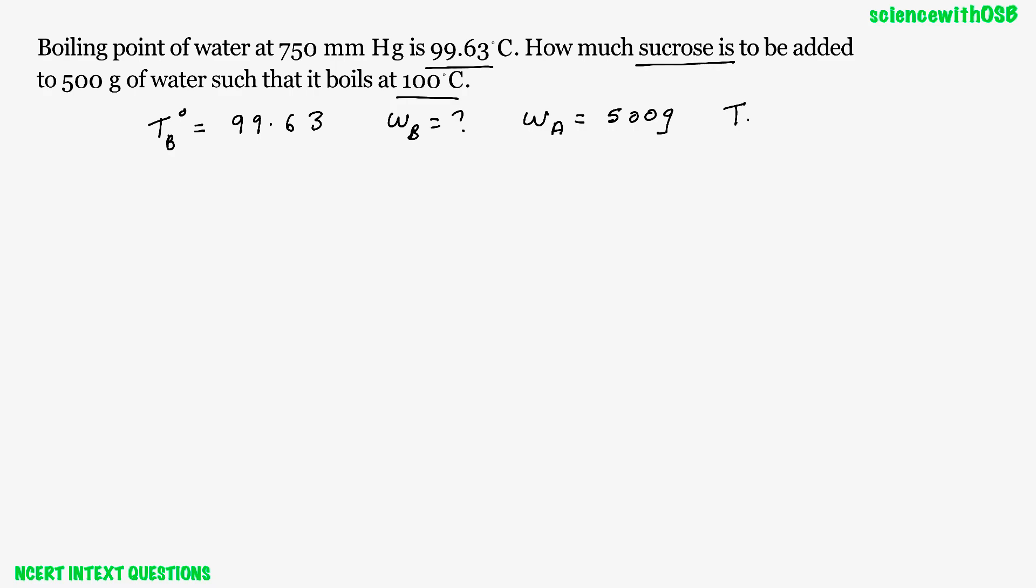Okay, now remember for all such questions they will give the KB value. Okay, KB value for water is 0.52. That they will give along with the question, 0.52. Okay, so these are the given values. See, it's a very easy question. You can directly use the equation for delta TB.